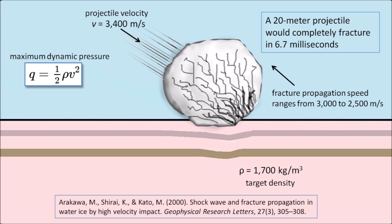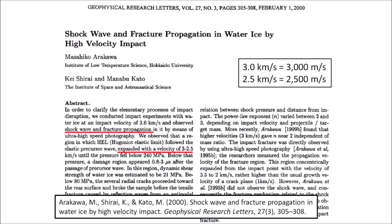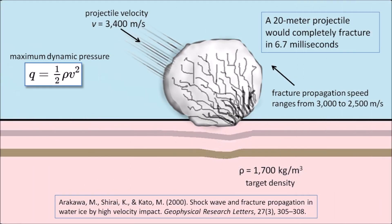The ice projectile does not fracture instantaneously. The calculation of maximum dynamic pressure indicates that the impact of an ice projectile on a target with density of 1,700 kg per cubic meter would far exceed the compressive strength of ice, and the ice projectile would start fracturing upon hitting the dense target surface. Arakawa and two co-authors used a gas gun to fire cylindrical projectiles at 3.6 kilometers per second at a cubic ice target, observing fracture propagation speeds of 2.5 to 3 kilometers per second. A 20-meter ice projectile would completely fracture in 6.7 milliseconds at a fracture propagation speed of 3,000 meters per second.